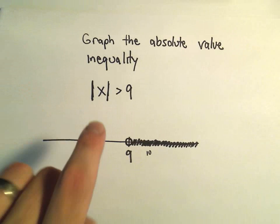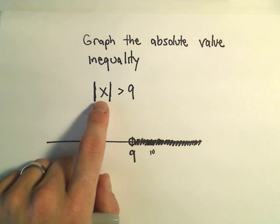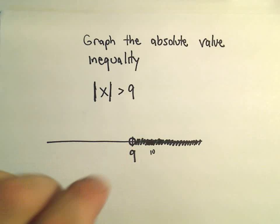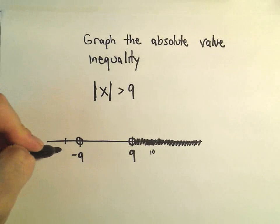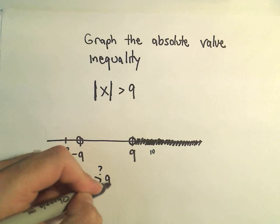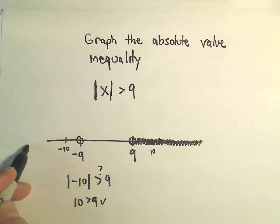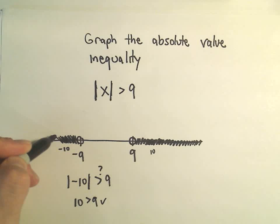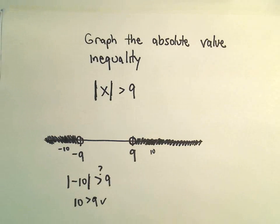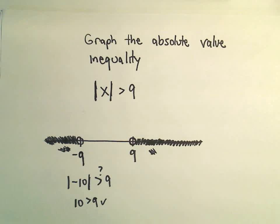Are there any other numbers that work? Well, negative 1 would give the absolute value of negative 1 as positive 1 — not greater than 9. Same with negative 2 through negative 8. The absolute value of negative 9 is positive 9, which is not bigger, so that doesn't work. But if we use negative 10, the absolute value of negative 10 is positive 10 — that is greater than 9. Likewise negative 11, 12, 13, and so on. So any number to the left of negative 9 or to the right of positive 9 satisfies our inequality. That's the shaded number line that goes with this inequality.